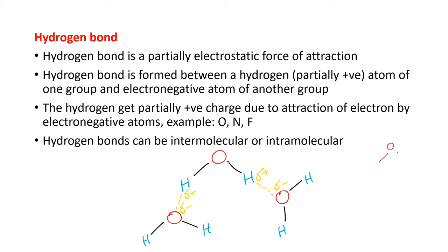The water molecule looks like this: oxygen with hydrogen and hydrogen. Now, how is the bond formed between one water molecule and another? Oxygen is electronegative — it is going to accept electrons from other atoms. The oxygen has some attraction of electrons from the hydrogen. As a result, there is development of a partial negative charge (δ−) on oxygen.